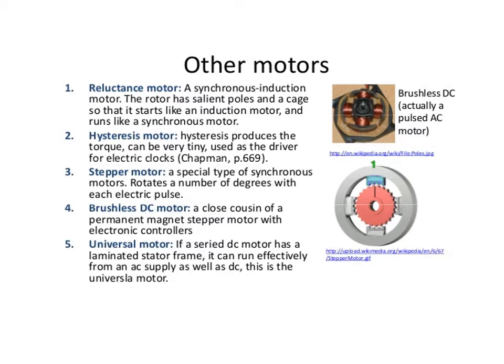We have different types of special machines to cover: first, the reluctance motor, universal motor, and stepper motor. The reluctance motor's synchronous induction motor rotor has a salient pole and a cage, so it starts like an induction motor and runs like a synchronous motor. The stepper motor is a special type of motor that rotates a number of degrees with each electrical pulse, normally operated by a microprocessor or microcontroller. The brushless DC motor is a close cousin of the permanent magnet stepper motor with electronic controllers. The universal motor is a series DC motor with a laminated stator frame that can run efficiently from an AC supply as well as DC.